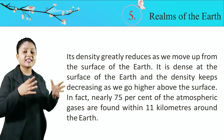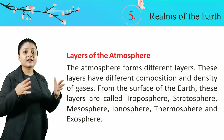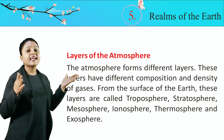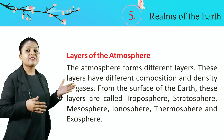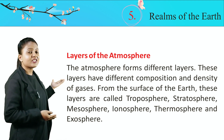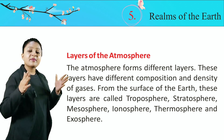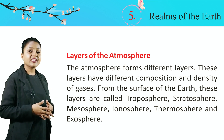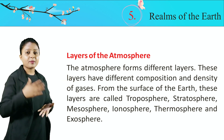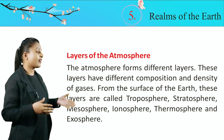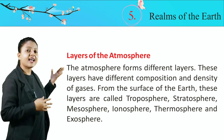Layers of the Atmosphere. The atmosphere forms different layers. These layers have different composition and density of gases. From the surface of the Earth, these layers are called troposphere, stratosphere, mesosphere, ionosphere, thermosphere, and exosphere. Atmosphere ki different-different layers hoti hain jo Earth ki surface se upar jaate-jaate badlati hain: pehle troposphere, phir stratosphere, phir mesosphere, phir thermosphere, ionosphere, aur last mein exosphere.